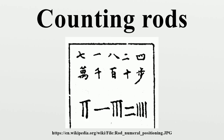Ancient Chinese clearly understood negative numbers and zero, though they had no symbol for the latter. The Nine Chapters on the Mathematical Art, mainly composed in the 1st century CE, stated: subtract same-signed numbers, add different-signed numbers, subtract a positive number from zero to make a negative number, and subtract a negative number from zero to make a positive number. Later, a blank space was sometimes used to represent zero.